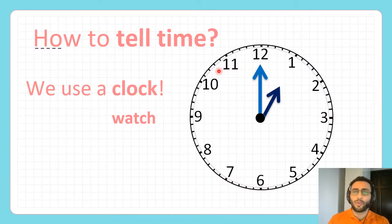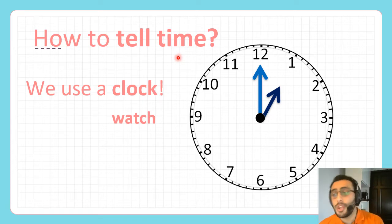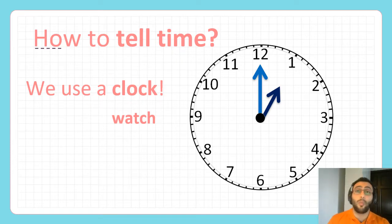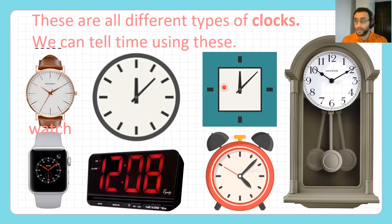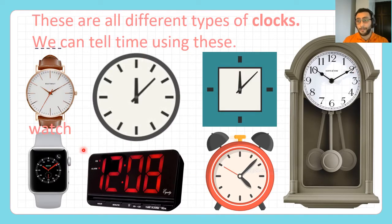How do we tell time? We use a clock or a watch. These are all clocks. This is a digital clock, and these two are watches.